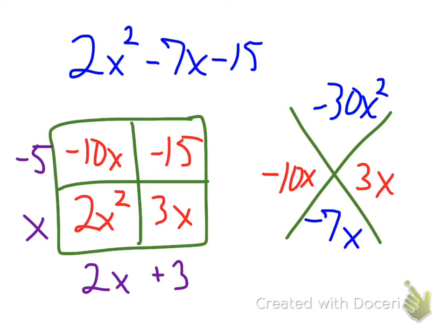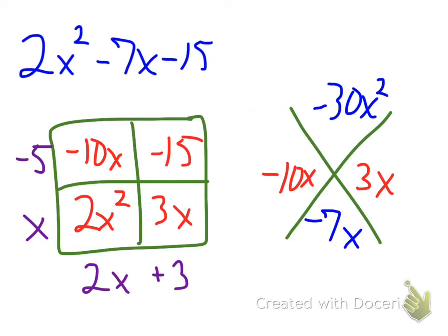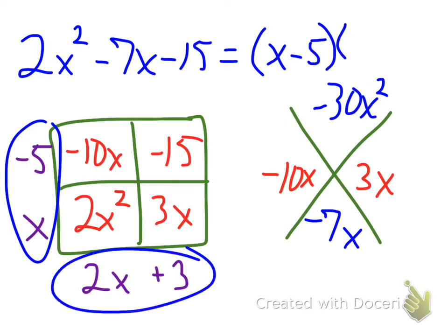So now, I started off with my 2x squared minus 7x minus 15. And in factored form, that is going to equal x minus 5 times 2x plus 3.